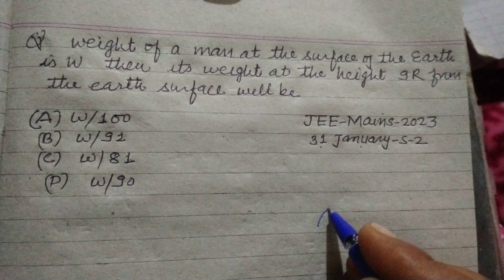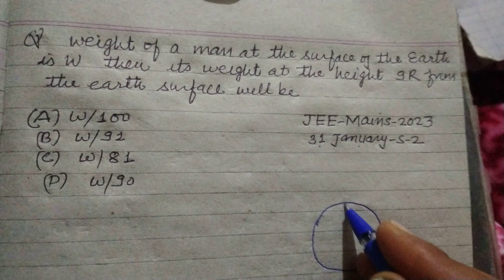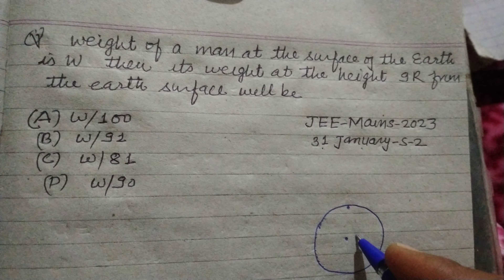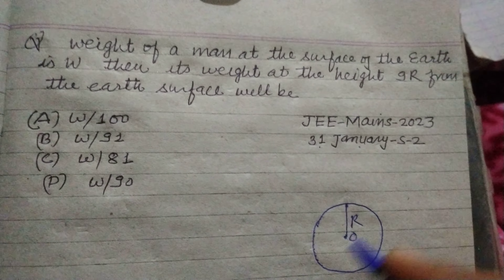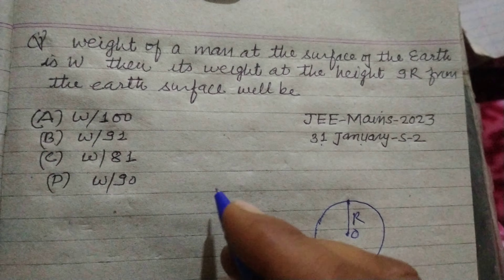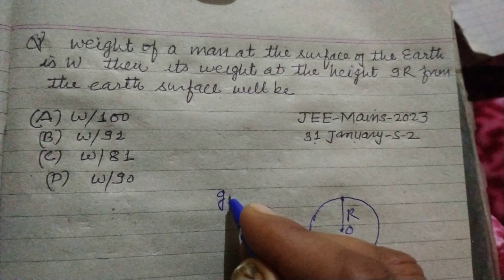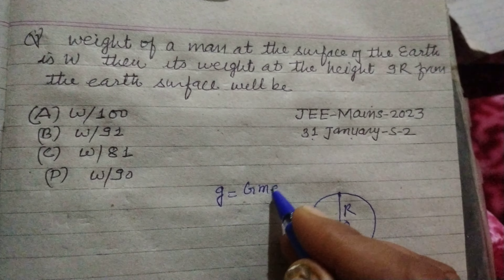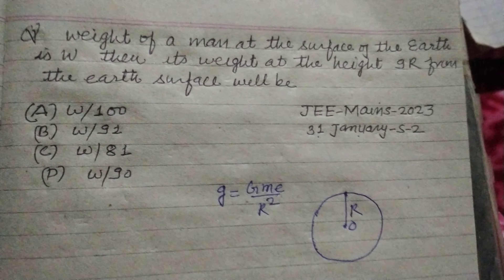So let this be the earth's surface, with the center of the earth at O and radius R. The acceleration due to gravity at the earth's surface is g = GmE / R².